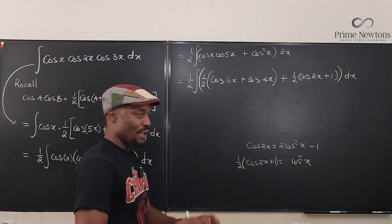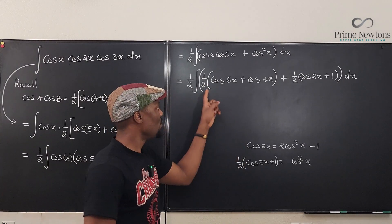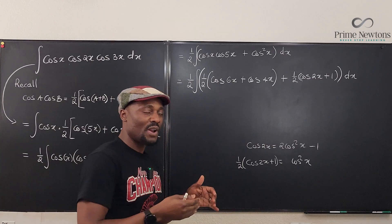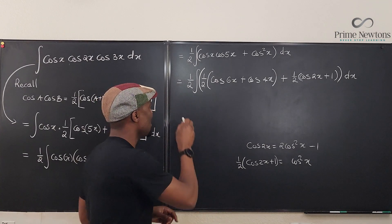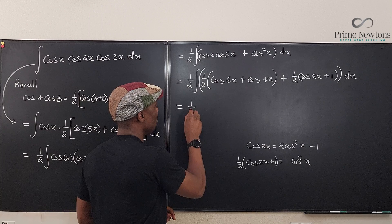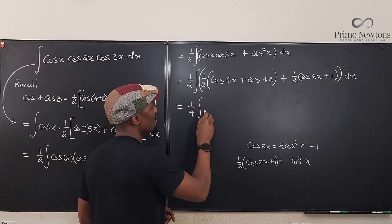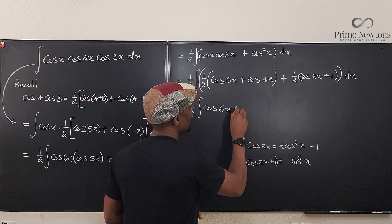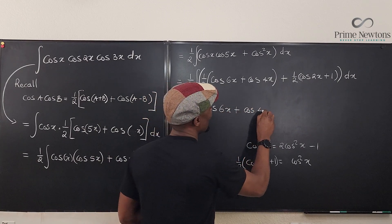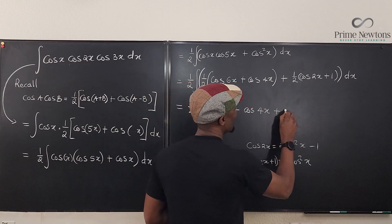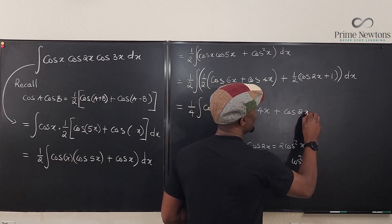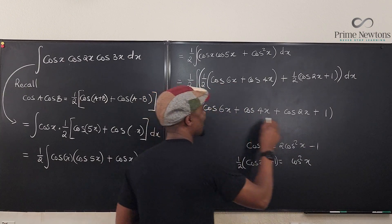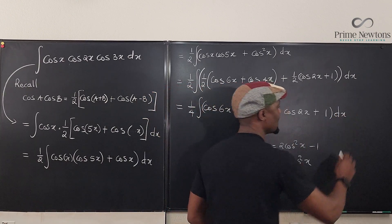Nice. If you make a good observation, the two terms on the inside each have 1 half. So I can pull out the 1 half and use it to multiply this so that my next line is 1 half of the integral of cosine 6x plus cosine 4x plus cosine 2x plus 1. Everything dx.